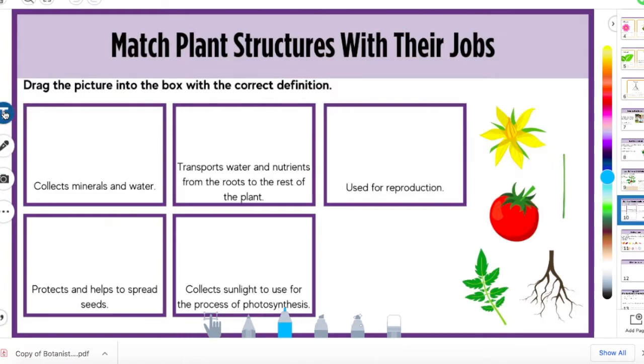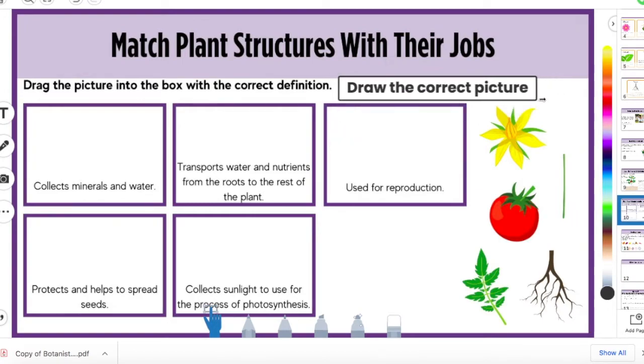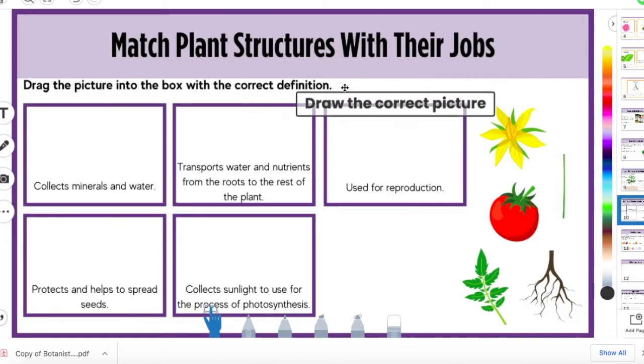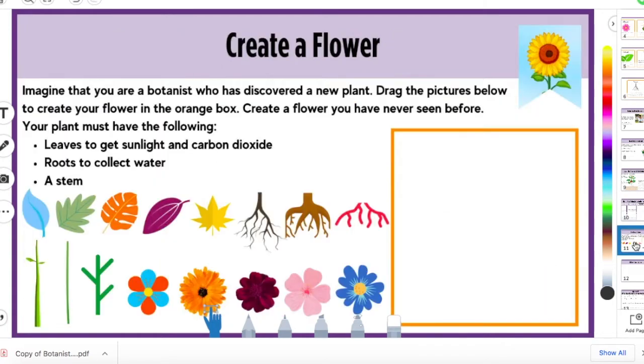You can kind of add a text box telling them those instructions if you think that would be helpful. So draw the correct picture. I'm not going to mess with this too much because you get the idea. I'm sure you guys are all better at using this than me. You can kind of do that there and then kind of same deal with this. They can draw it in using their tools that they have.